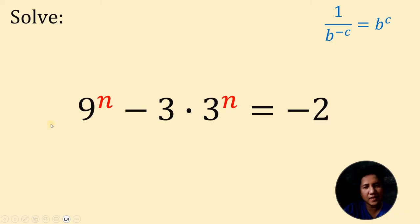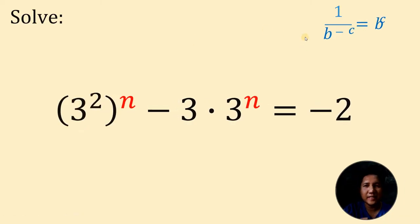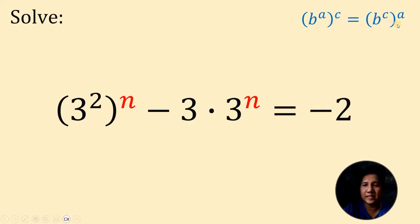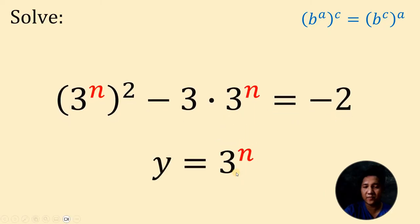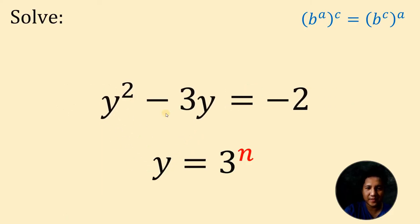Now, another thing to notice here is this 9 — this 9 is 3 raised to 2. And take note that when we have b raised to a raised to the power of c, this can be written as b raised to c raised to the power of a. So we can interchange this 2 and n. Therefore, 9 raised to n can be written as 3 raised to the power of n raised to the power of 2. Now take note of this — we have 2 common terms: 3 raised to n. So to make this simple, let y be equal to 3 raised to n. Therefore, we can replace 3 raised to n with the variable y, which gives us y squared minus 3y equals negative 2.